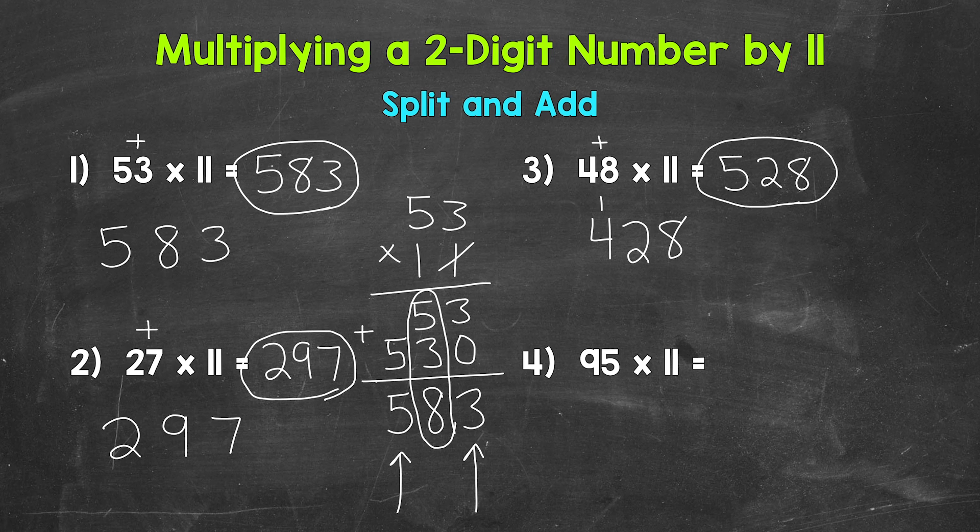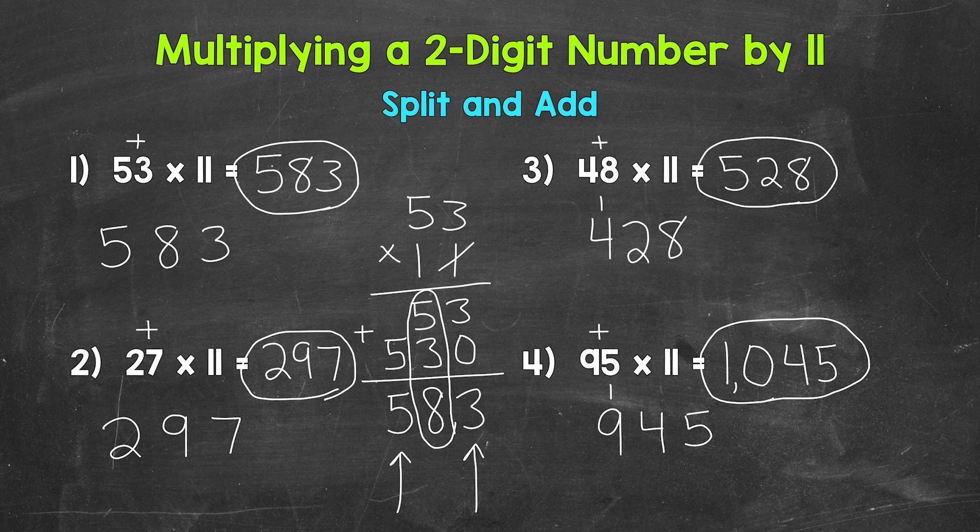Lastly, let's move on to number 4, where we will have another one where we need to carry. We have 95 times 11. Split and add. So split. And then add. 9 plus 5 is 14. So put the 4 in between, and then carry the 1. Now in the hundreds place, we have 1 plus 9, which is 10. So the 1 is in the thousands place, and then the 0 is in the hundreds place. Then we have the 4 and the 5. So 95 times 11 equals 1045.